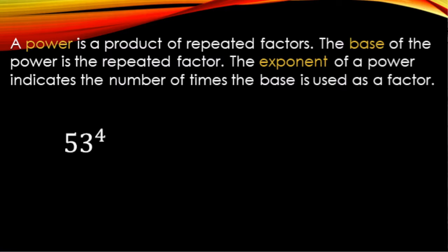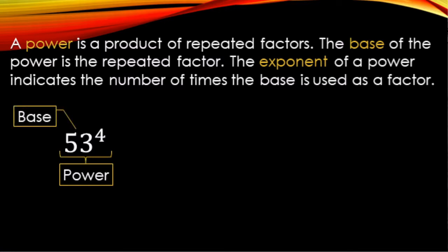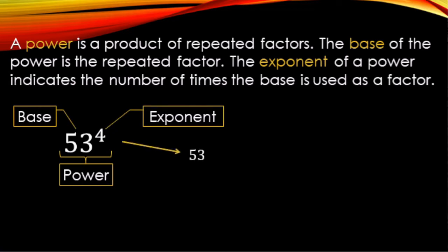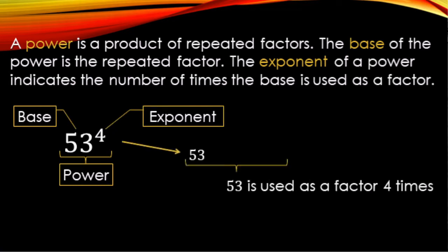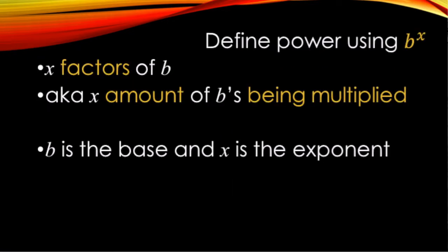So let's say we have 53 to the fourth. That's our power — 53 is the base and the exponent is 4, meaning 53 is multiplied four times. More generally, b to the x power means we have x factors of b, or in simpler terms, x copies of b being multiplied together.